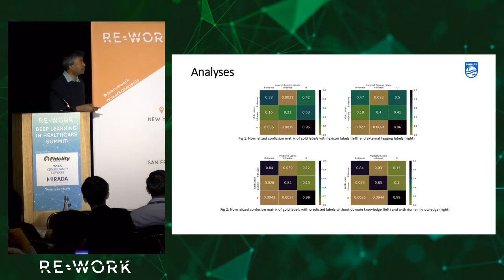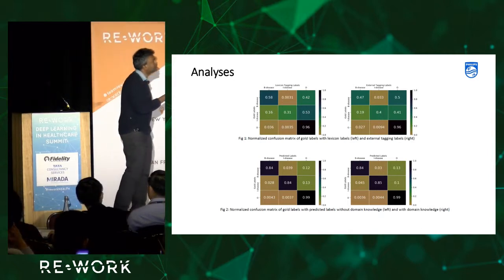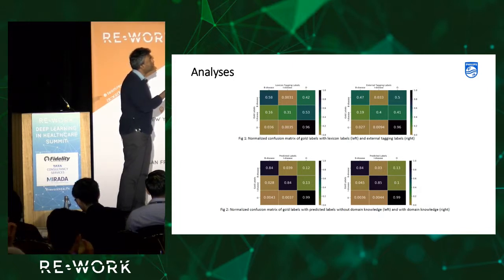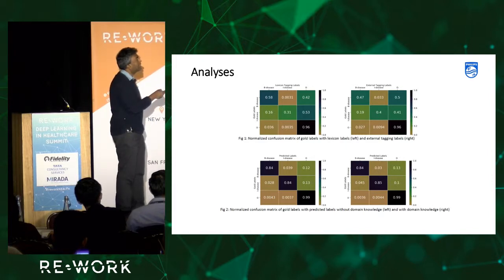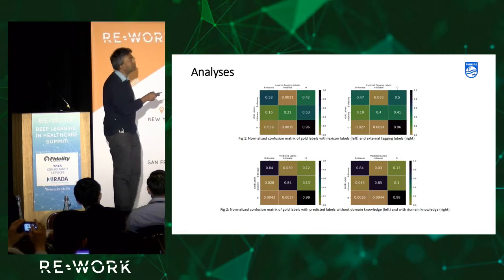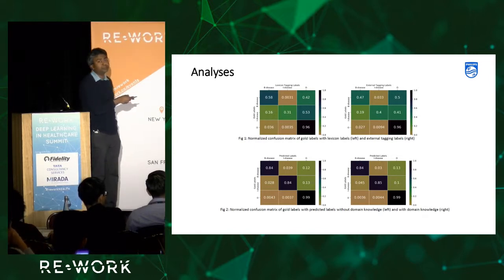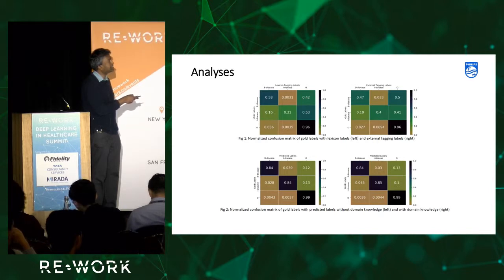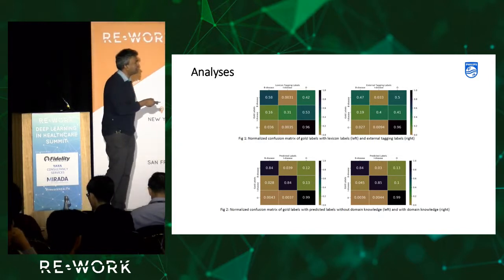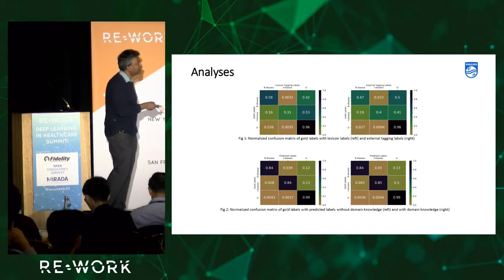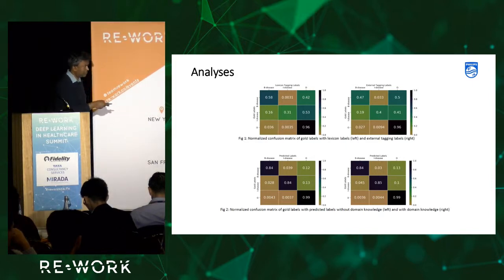In the confusion matrix analysis, the lexicon labels show that predicting B-disease (beginning of disease) from just lexicon embeddings is very low when matched against gold labels, and I-disease (inside disease) is also low. The external tagging embeddings from our NLP engine improve inside-disease prediction but fail at predicting the beginning of disease. For the deep learning model, adding domain knowledge yields a higher score for inside-disease prediction.